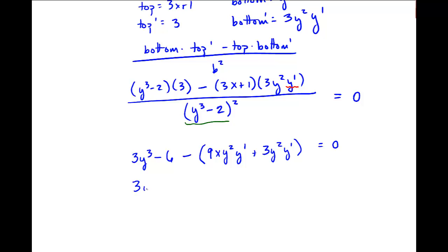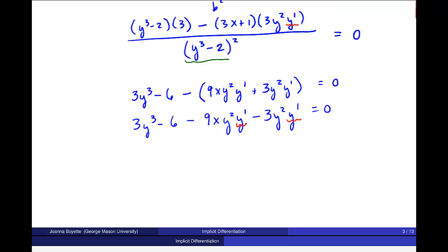And I will then distribute this minus and then figure out what I'm talking about in this particular case or where I'm going. So there's my y prime and there it is. So I'm going to move everything else over to the right side. So I get negative 9xy squared y prime minus 3y squared y prime is equal to, then I'll get negative 3y cubed plus 6.